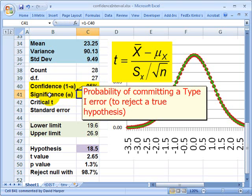What we can also say about the significance, which I'll show you shortly, is that it is the probability of committing a type 1 error. What is a type 1 error? That's when we reject a null hypothesis that is really true.